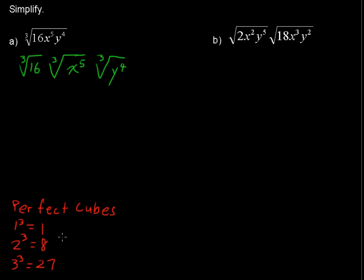Well, this one is something that we can factor out, this 8. 8 is a factor of 16. So I'm going to rewrite that as the third root of 8 multiplied by the third root of 2. We just multiplied 8 times 2 to get 16.